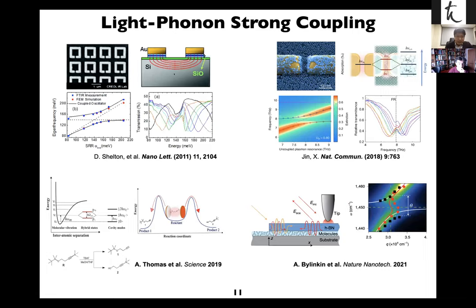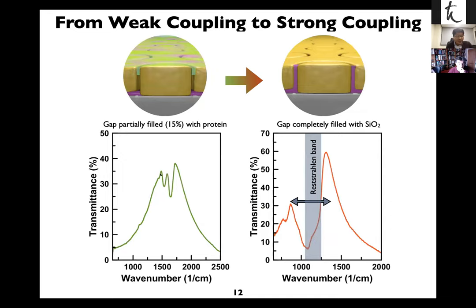Since vibrational strong coupling in the mid-IR range has been studied by many groups, we were interested in using our coaxial resonator cavity to study this topic. Our next step was to ask: instead of partially filling the gap with protein molecules, how can we push this light-matter interaction into the ultra-strong coupling regime? We chose SiO2 film to couple light with vibrational polar phonons. During fabrication, we can completely fill the cavity with SiO2 film, enabling us to make the transition from weak coupling to ultra-strong coupling regime.